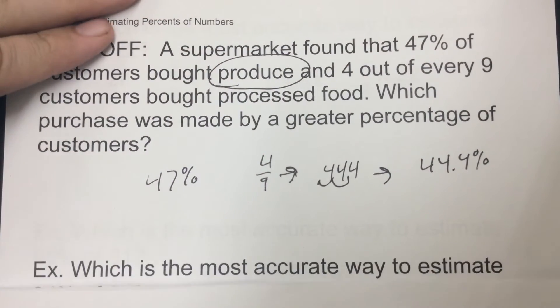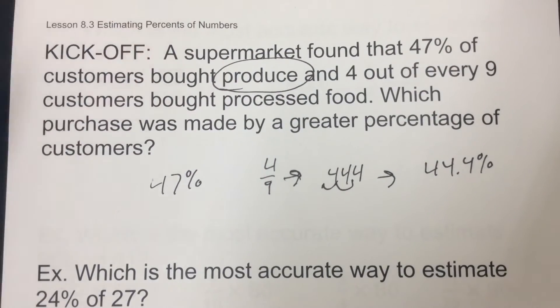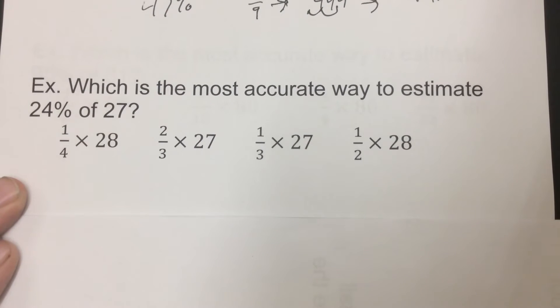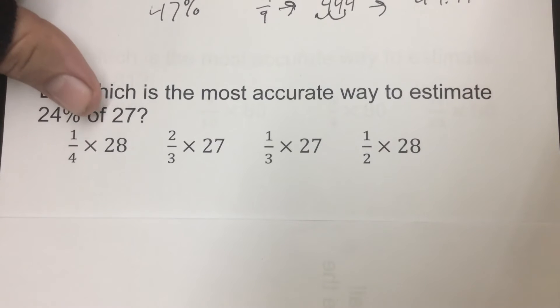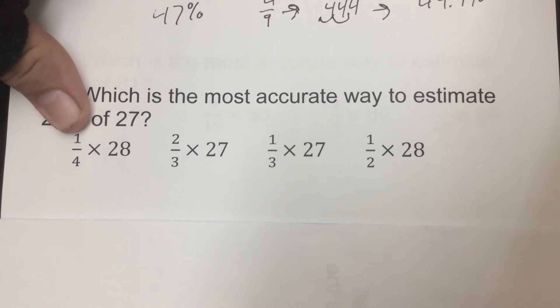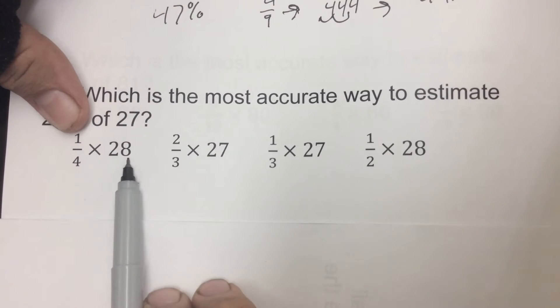Now get into today. You're gonna have something like this where it says which is the most accurate way to estimate 24% of 27, and that's gonna give you four options. First thing you will look at is the percent. We're gonna make that percent into a fraction. So 24% is close to 25%, and 25% I know is one-fourth.